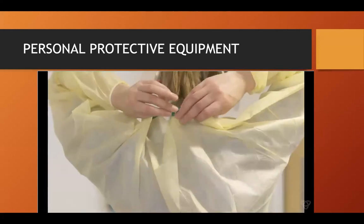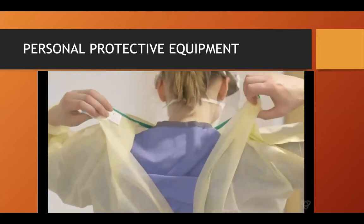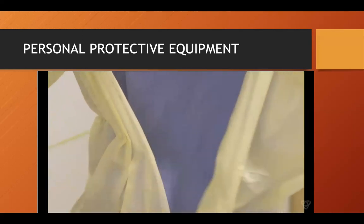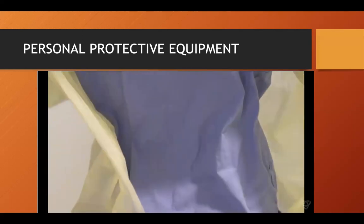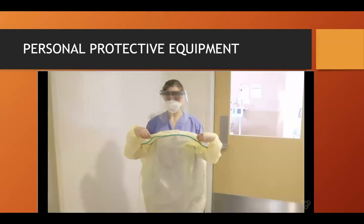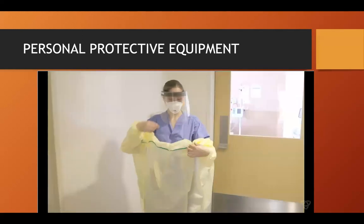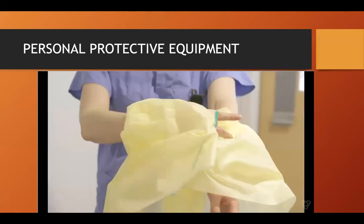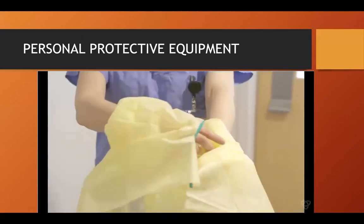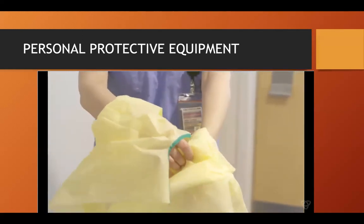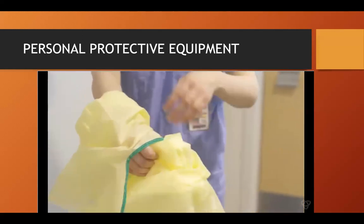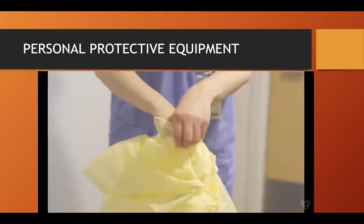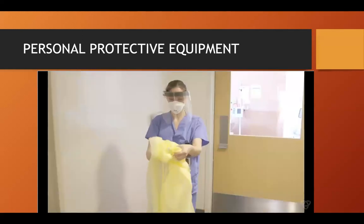Remove your gown by first opening at the neck and then at the waist. From the back of the neck, take the gown and slowly pull it out and away from you. Ensure you are only touching the inside of the gown as you roll it into a ball and then throw it into the garbage.